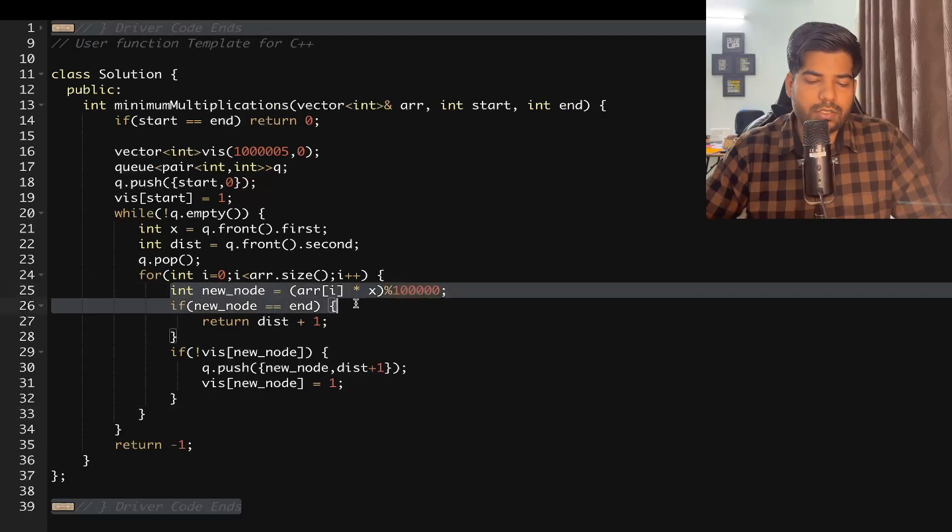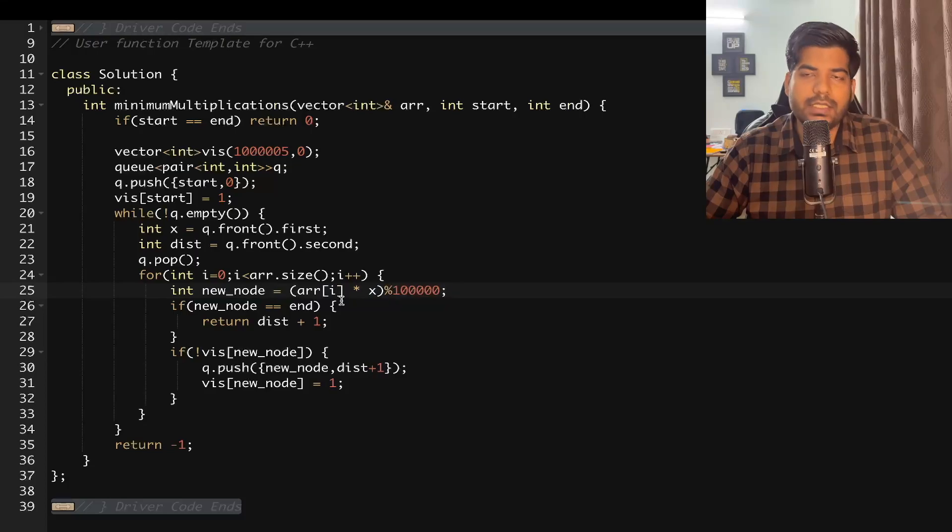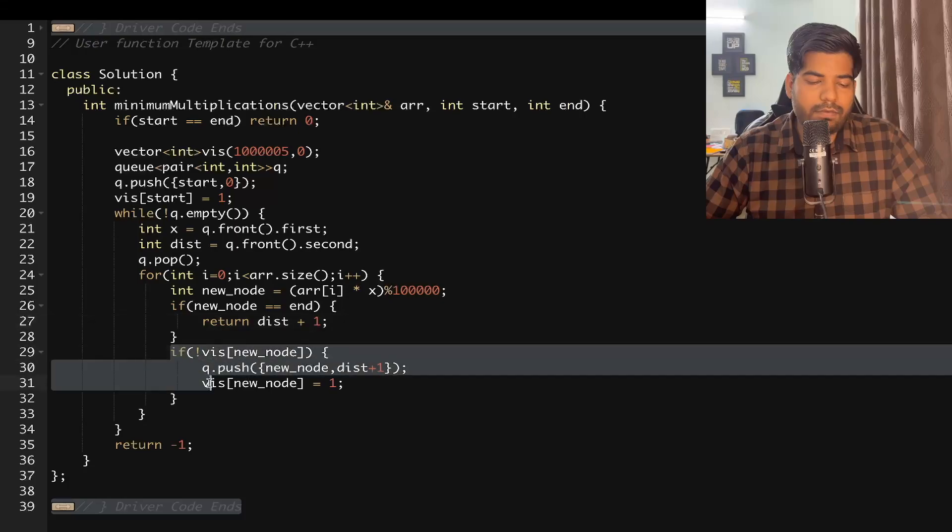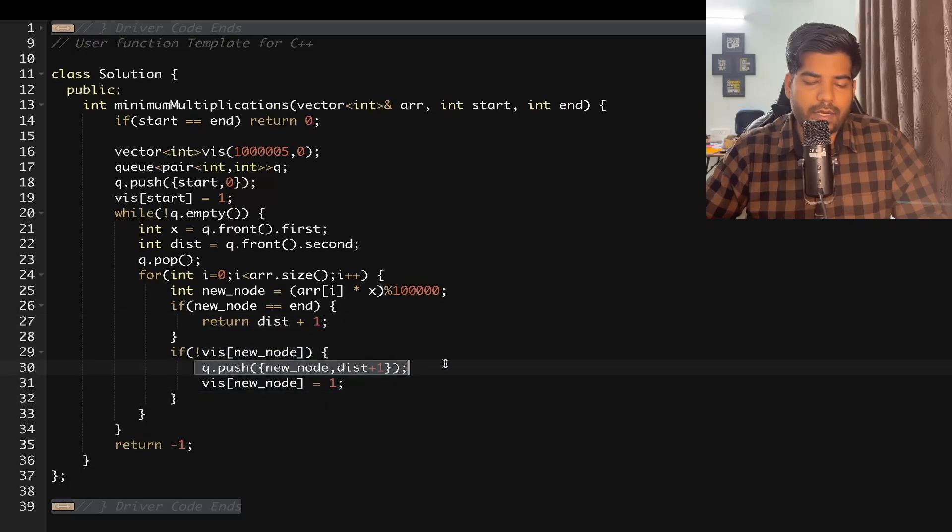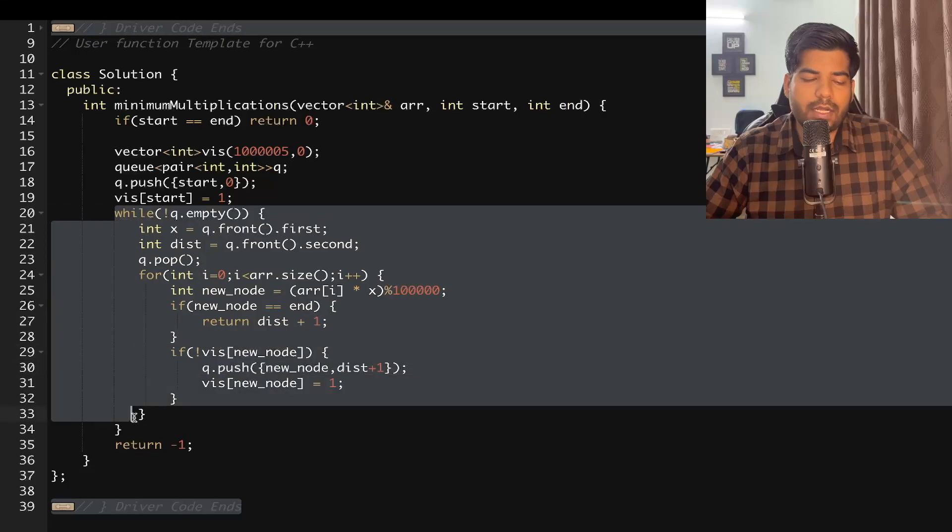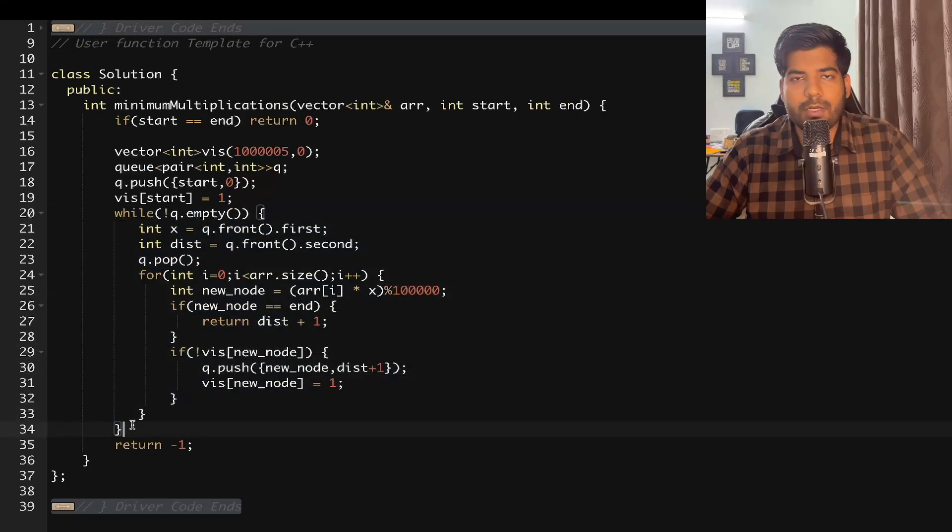Now we can multiply my x with each of the nodes. So my new node is going to be array of i into x modulus 10 to the power of 5, as given in the problem. If my new node is going to be end, it means that I have reached this new node by a distance of whatever the previous distance plus 1. So we can return that simply. And if my new node is not visited, we can push that in our queue with a distance equal to previous distance plus 1, and we can mark that as visited. In the end, when we are done with this, if we are not able to find the end node, we can simply return minus 1.